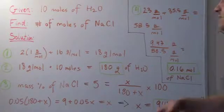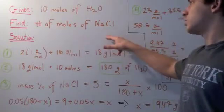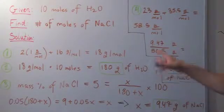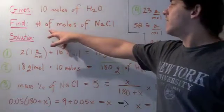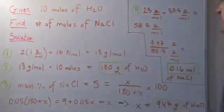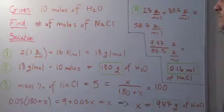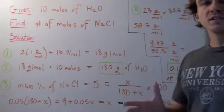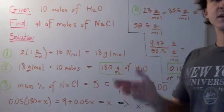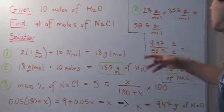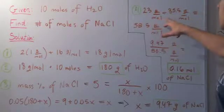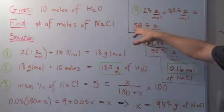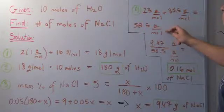The final step is to find the number of moles of sodium chloride. We have the number of grams we need to add, but our question asks for moles. To find that, we need the molecular weight of sodium chloride, which is the atomic weight of sodium plus chlorine: 23 grams per mole plus 35.5 grams per mole gives us 58.5 grams per mole.